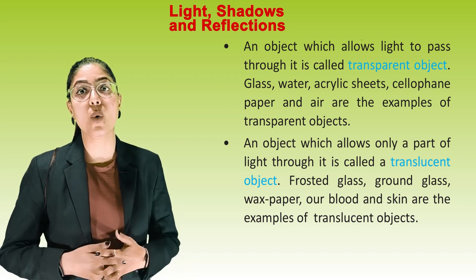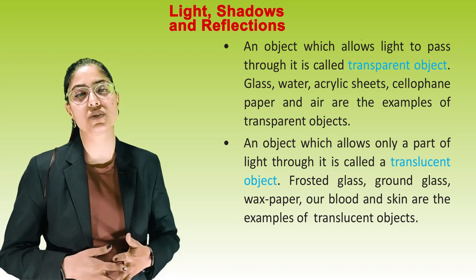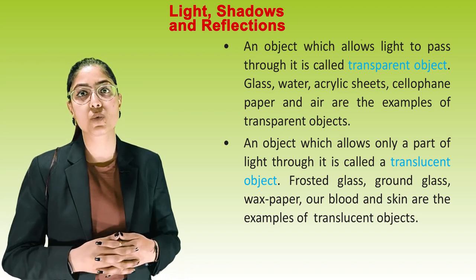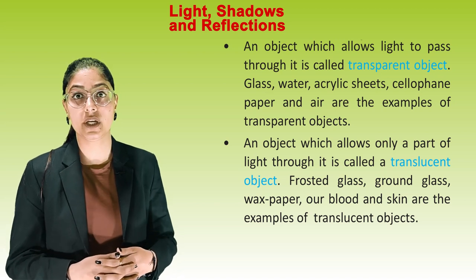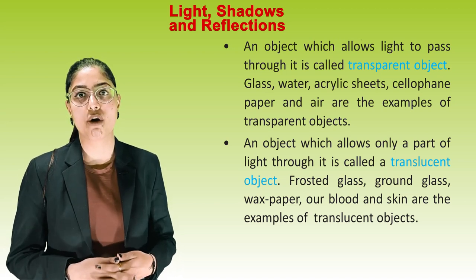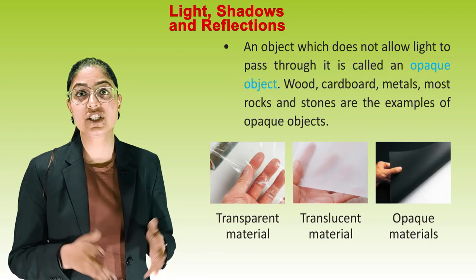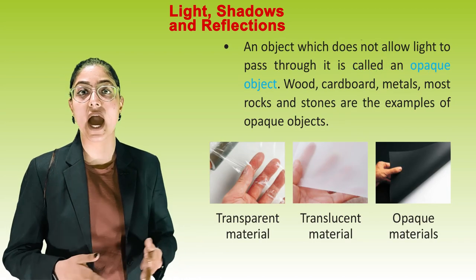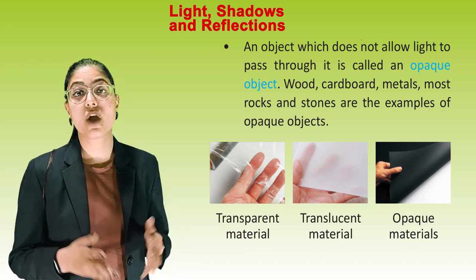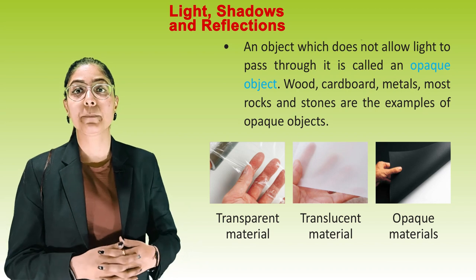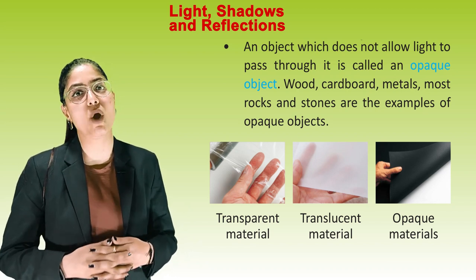An object which allows only a part of light through it is called a translucent object. Frosted glass, ground glass, wax paper, and skin are examples of translucent objects. An object which does not allow light to pass through it is called an opaque object. Wood, cardboard, metals, most rocks and stones are examples of opaque objects.